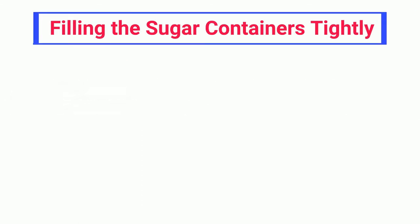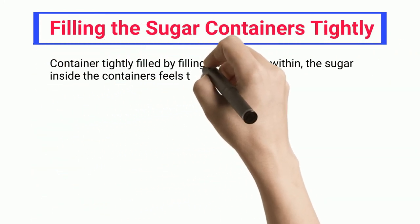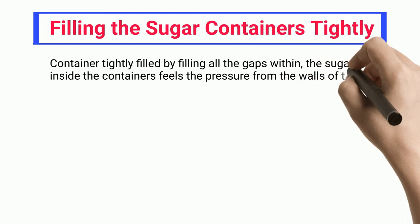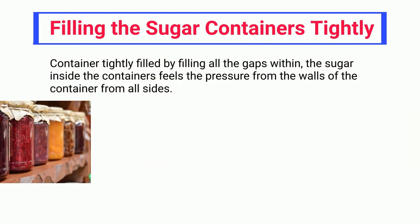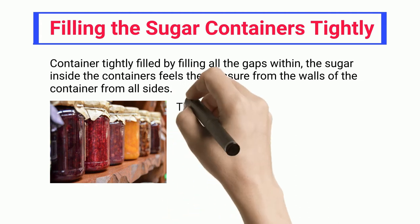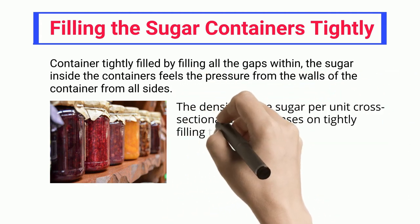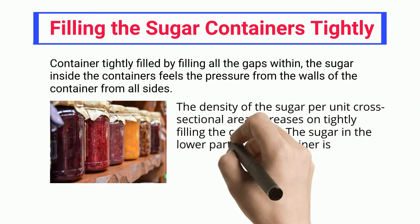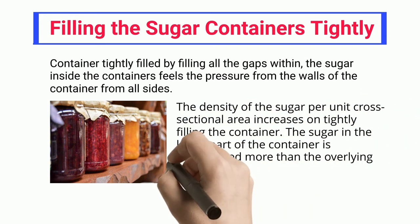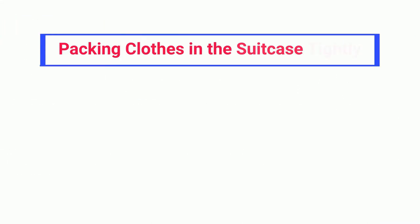Filling sugar containers tightly: when a container is tightly filled, the sugar fills all gaps and feels pressure from the walls on all sides. The density of sugar per unit cross-sectional area increases, and the sugar in the lower part of the container is compressed more than the overlying volume.